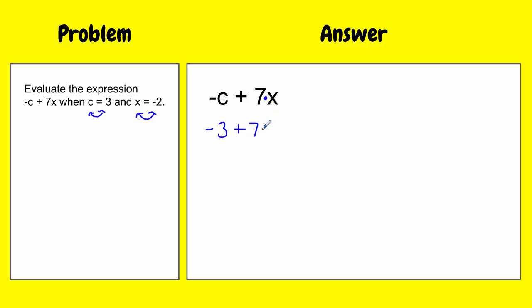So this is saying 7 times x. x is negative 2. And now we just follow the order of operations to simplify.